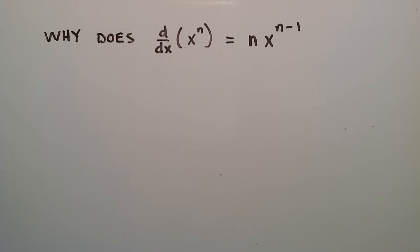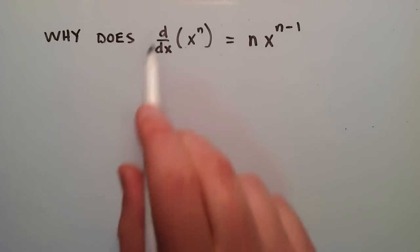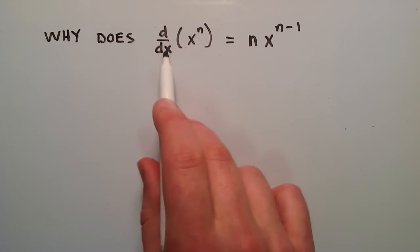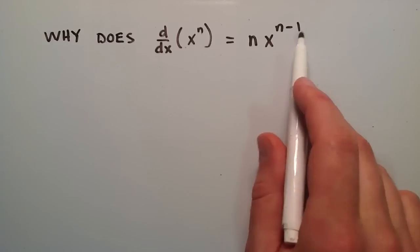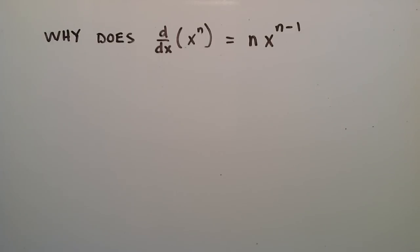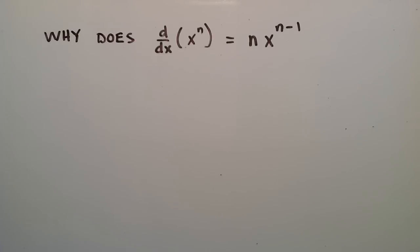Hey everybody, this is Paul. Welcome to part 4 of why does the derivative of x to the n with respect to x equal n times x to the n minus 1. In parts 1, 2, and 3 I covered some math that I thought you would want to understand before watching this proof. Part 1 I talked about factorials, part 2 I talked about combinations, and part 3 I talked about the binomial theorem.